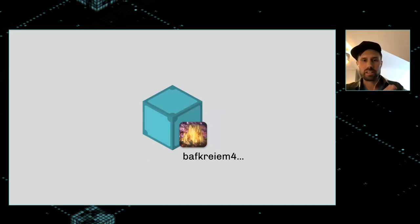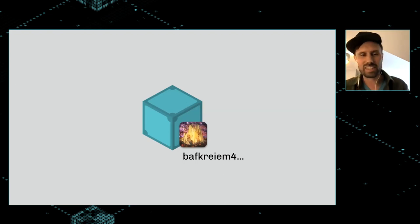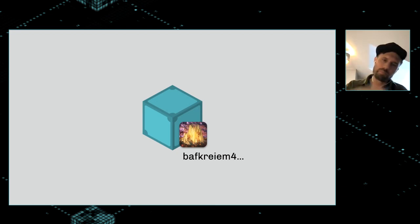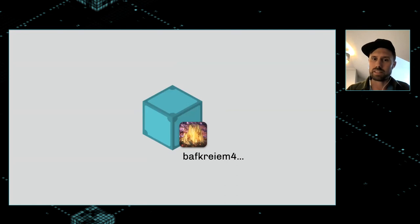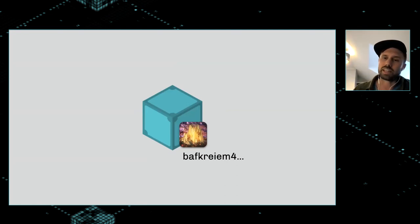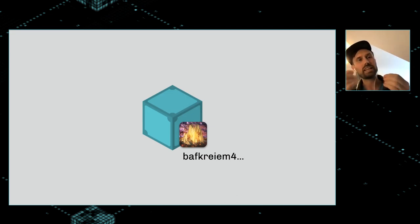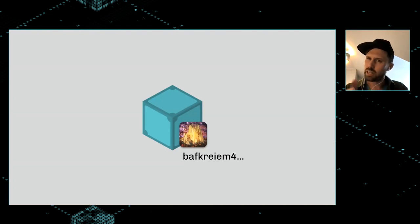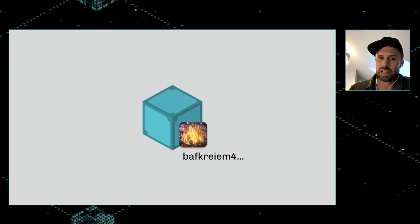If you put data on an IPFS node — I've chosen this little image, it's an NFT, like some generated mountains — you get a content identifier, a CID. CIDs are a kind of cryptographic hash, and they address the content, not its location. This means a given CID will always refer to the same piece of content. Or to put it another way, if the content changes, the CID for that content would change.